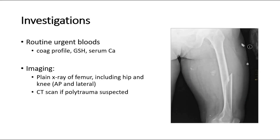For investigations, routine urgent bloods, including a coagulation and group and save, should be sent. Where a pathological cause is suspected, further workup bloods such as a serum calcium may be warranted. For imaging, plain X-ray of the femur including hip and knee should be done. CT scan if suspecting polytrauma, to further assess intra-articular or femoral neck fractures. This is a picture showing an AP view of plain film radiograph, demonstrating a mid-shaft femoral fracture.